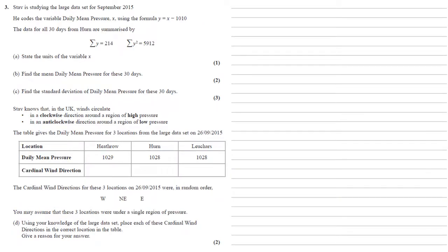Stav is studying the large dataset for September 2015. He codes the variable daily mean pressure x using the formula y equals x minus 1010. The data for all 30 days from Hearn are summarized by sum of y equals 214 and sum of y squared equals 5912.